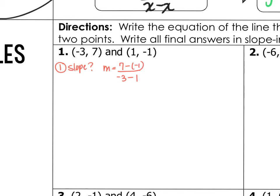So my slope is 8 over negative 4, also known as negative 2. So now I have my slope.